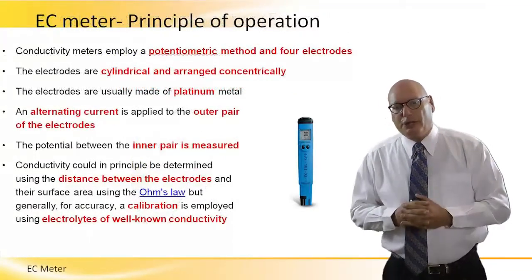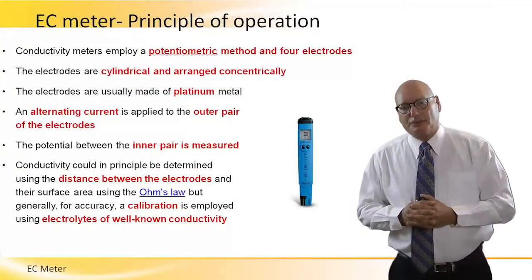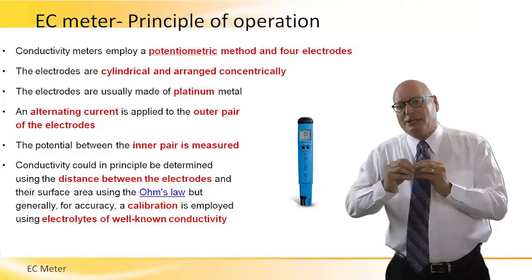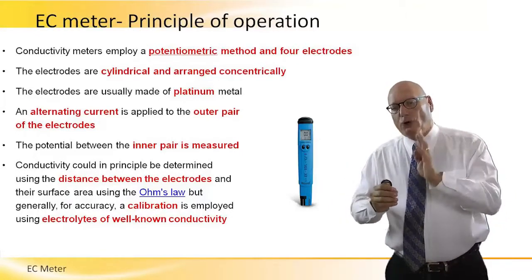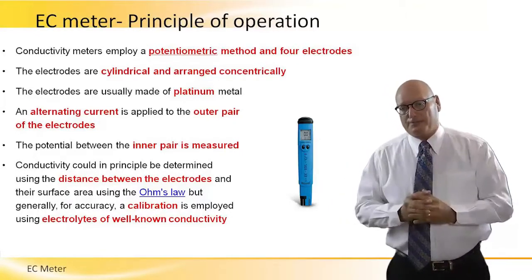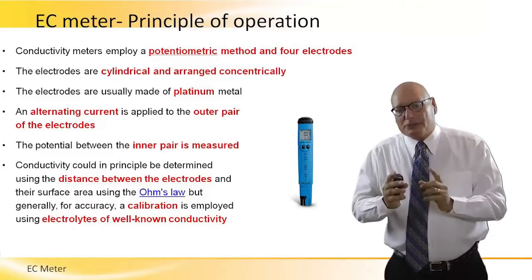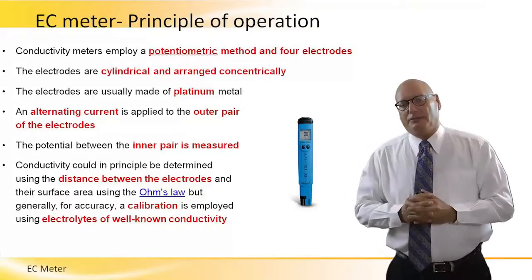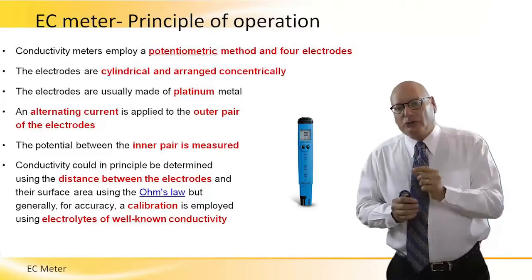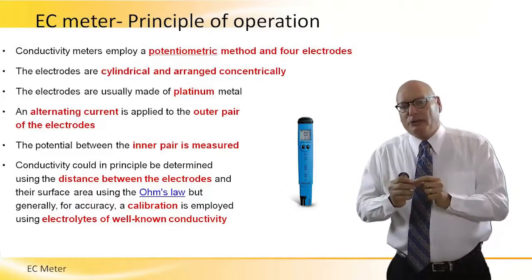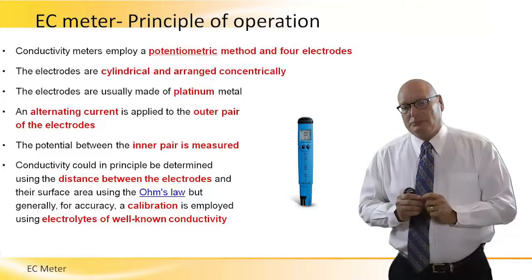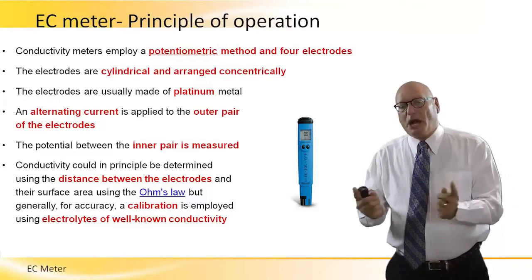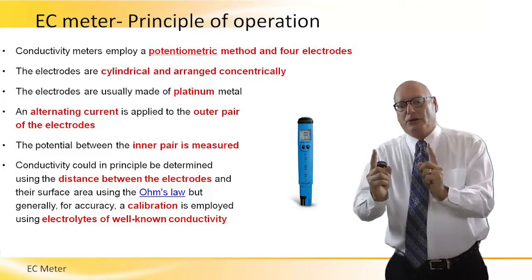The principle of operation is as such. Conductivity meters employ a potentiometric method and four electrodes. The electrodes are cylindrical and arranged concentrically, and are usually made of platinum. AC — alternating current — is applied to the outer pair of the electrodes.